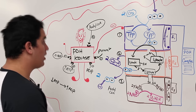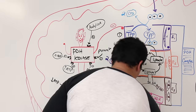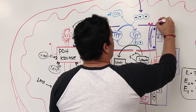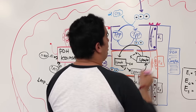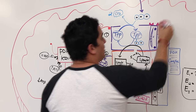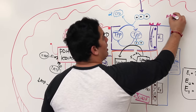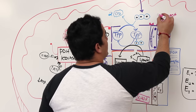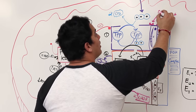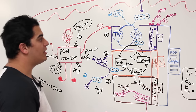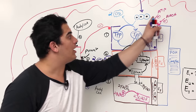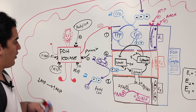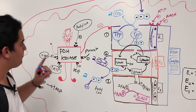Enzyme one also has direct allosteric pockets on him. Too much NADH or too much ATP directly inhibits enzyme one as well — so these molecules act as both direct and indirect inhibitors.